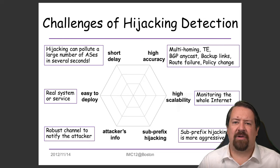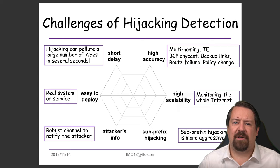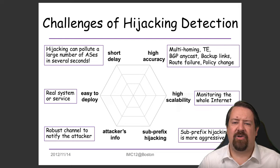Some of the challenges are that many autonomous systems are multi-homed, so they may advertise the same prefix through more than one ISP and may switch from one to another. This can also happen when there's a backup link in place. There are always changes in policy or failures in the network that cause AS paths to change every hour of every day. A hijacking event can be quite rapid and can pollute many ASs in several seconds. We also have scalability concerns, and there's a problem called sub-prefix hijacking that is even more aggressive.